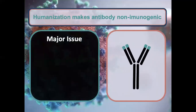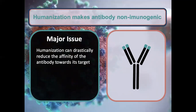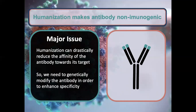There is a major issue: humanization can drastically reduce the antibody's affinity toward a particular target. Even though the variable and constant regions are spatially separated, the whole antibody interacts in ways that affect the end tips. A change in sequence down in the constant region may affect electrostatics or steric properties that change behavior in the variable regions. So when you humanize antibodies, the affinity toward the antigen of interest is rapidly reduced, and we need a way to genetically modify the antibody to re-enhance its specificity.